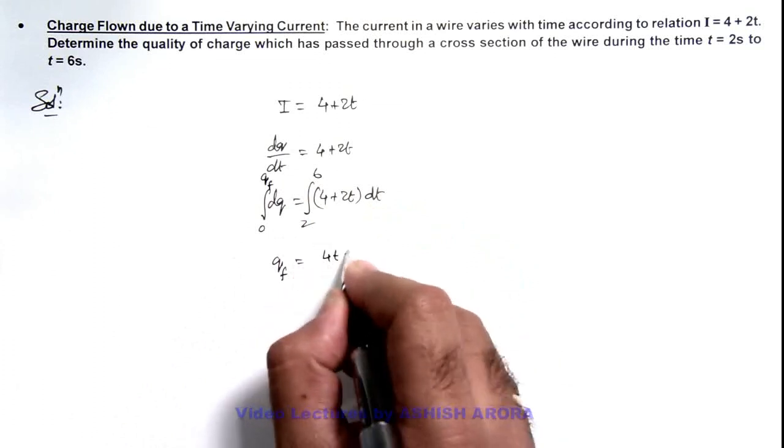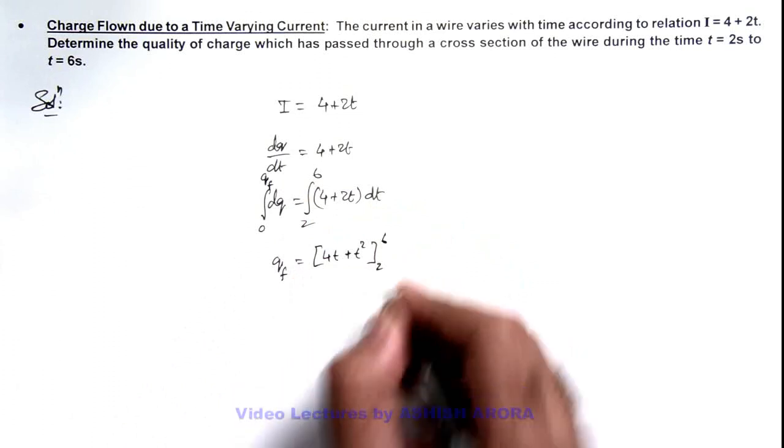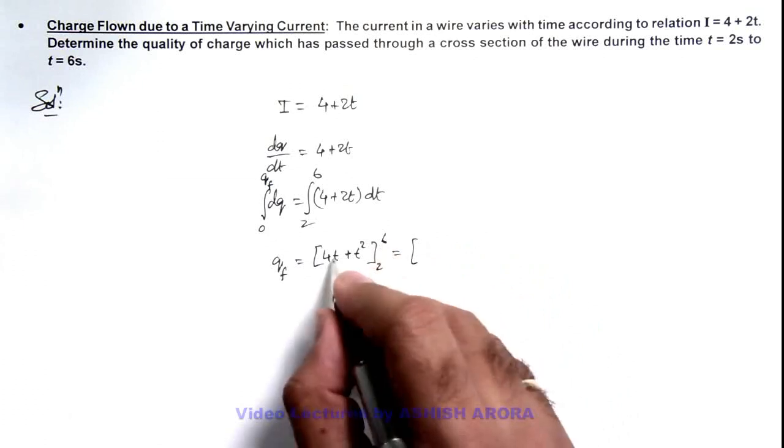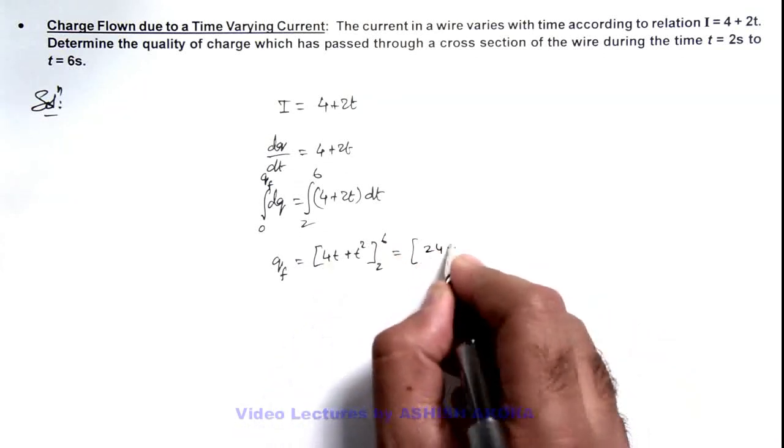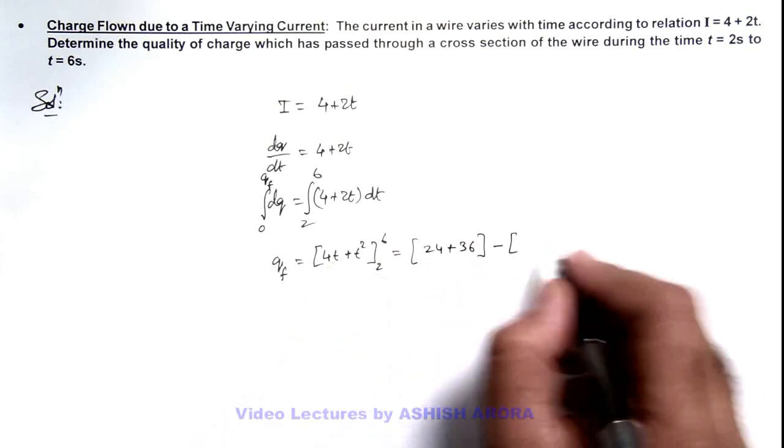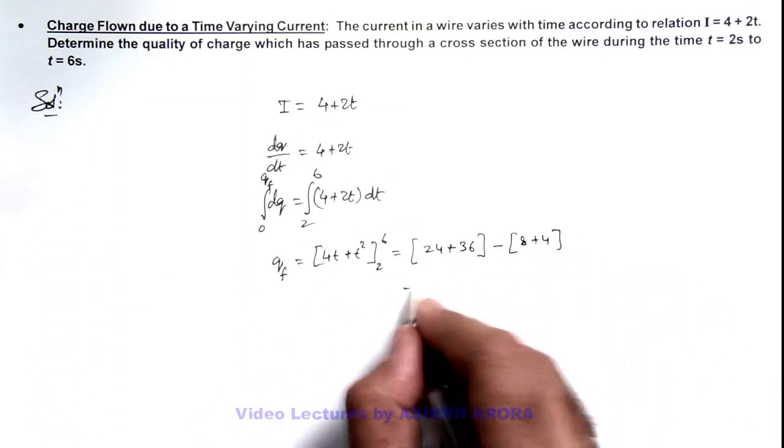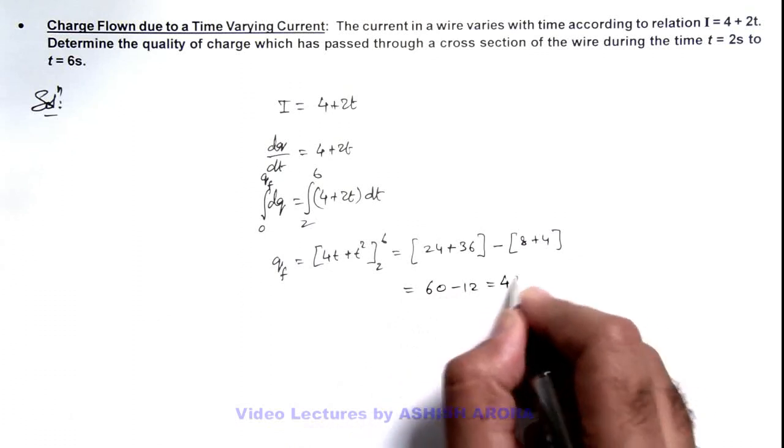That will be 4t + t² and we apply limits from 2 to 6. So here this value is given as, when we put the value of time as 6 this is 24 + 36, minus when you put the lower limits it is 8 + 4. So on simplifying you are getting this as 60 minus 12, the result will be 48 coulombs.